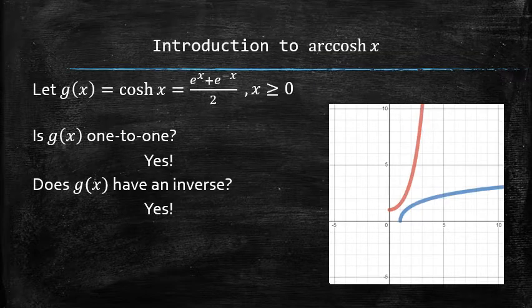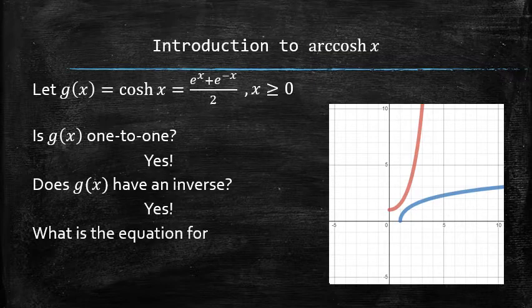And here's what it looks like. We call this function the hyperbolic arc cosine. However, it is not a new function and we have seen this function before. So what is the equation of this function? Let's find out.